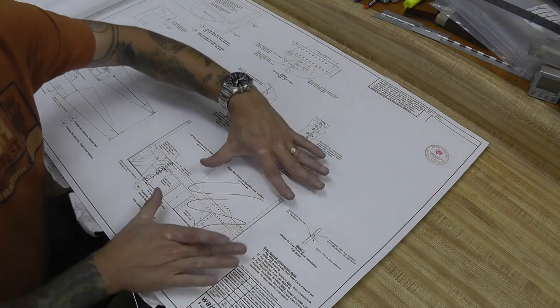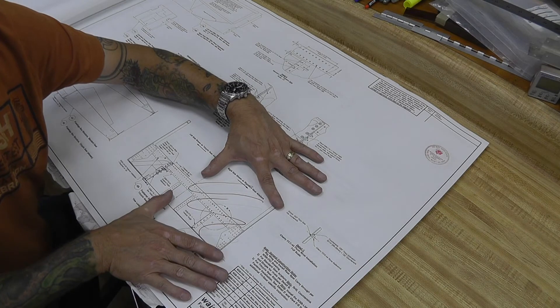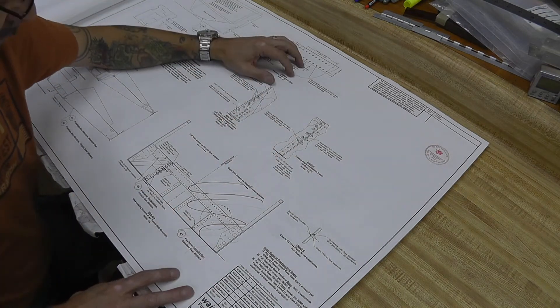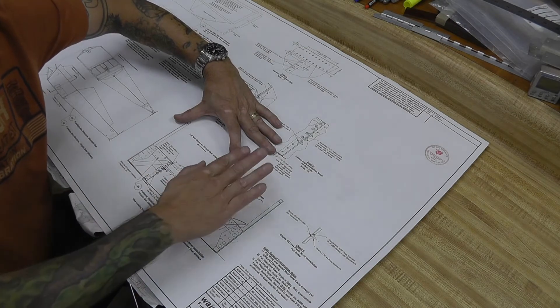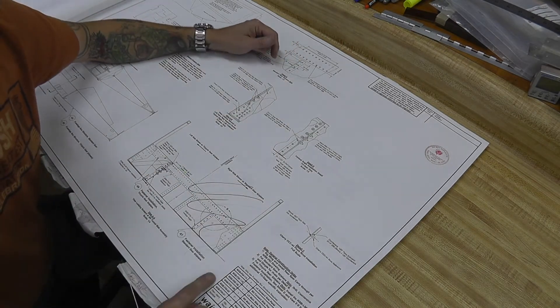This section here applies towards a standard gear tail dragger aircraft. Mine happens to be the tricycle gear, so I have to pay attention to what's over here. This is irrelevant, so let's just wipe it right out.